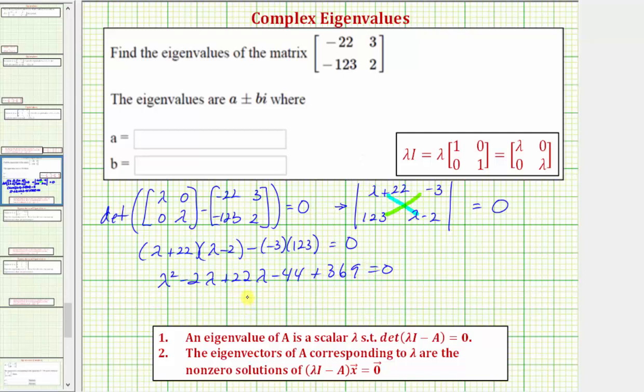So combining like terms, we have lambda squared plus 20 lambda plus 325 equals zero. Let's continue solving this equation on the next slide.